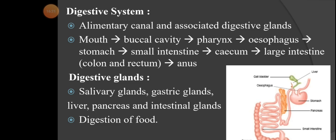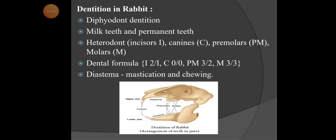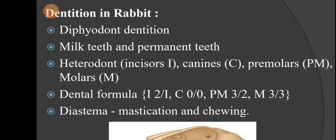The anus is the final end through which excretory products are excreted. Digestive glands include salivary glands (parotid and sublingual glands) present in the mouth, gastric glands (like amylase) in the stomach, and liver, pancreas, and intestinal glands — all involved in digesting food.